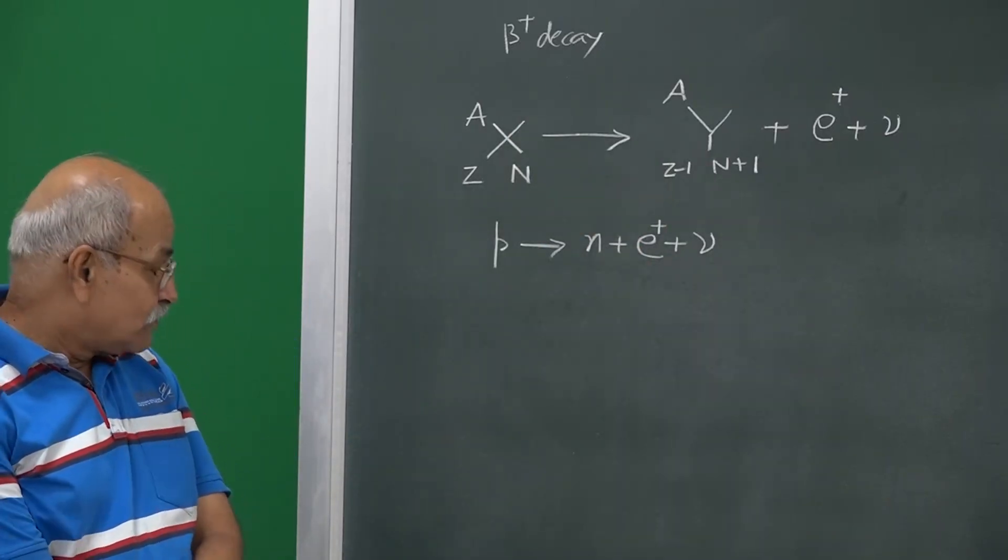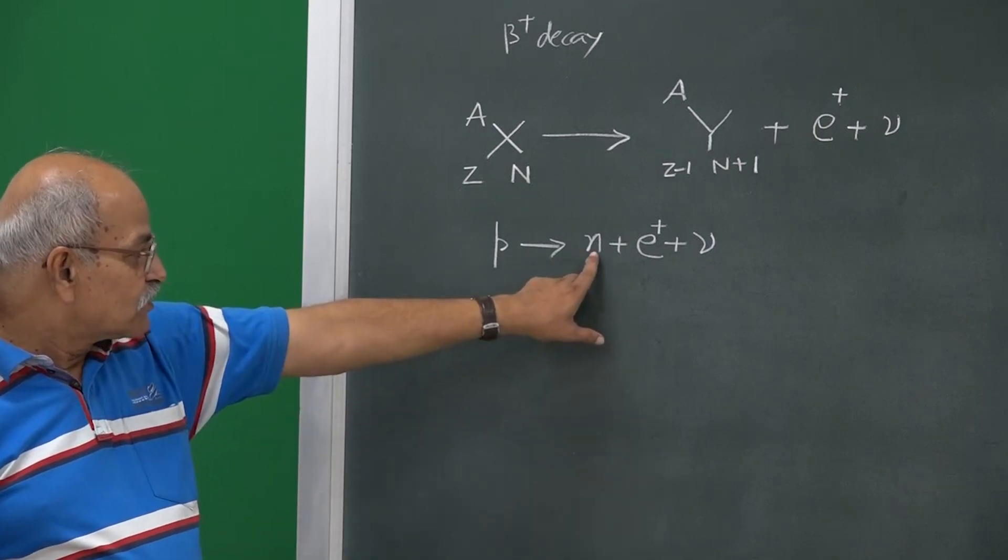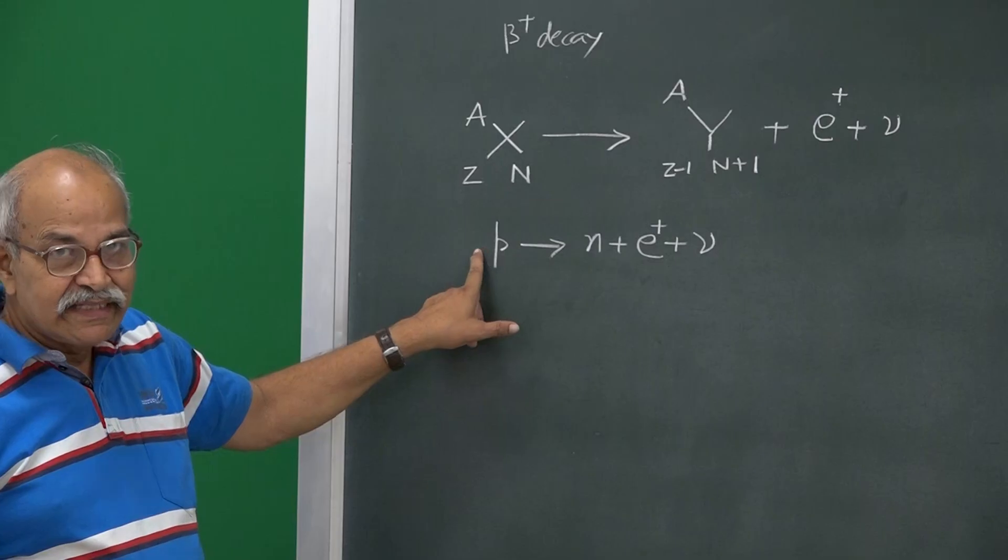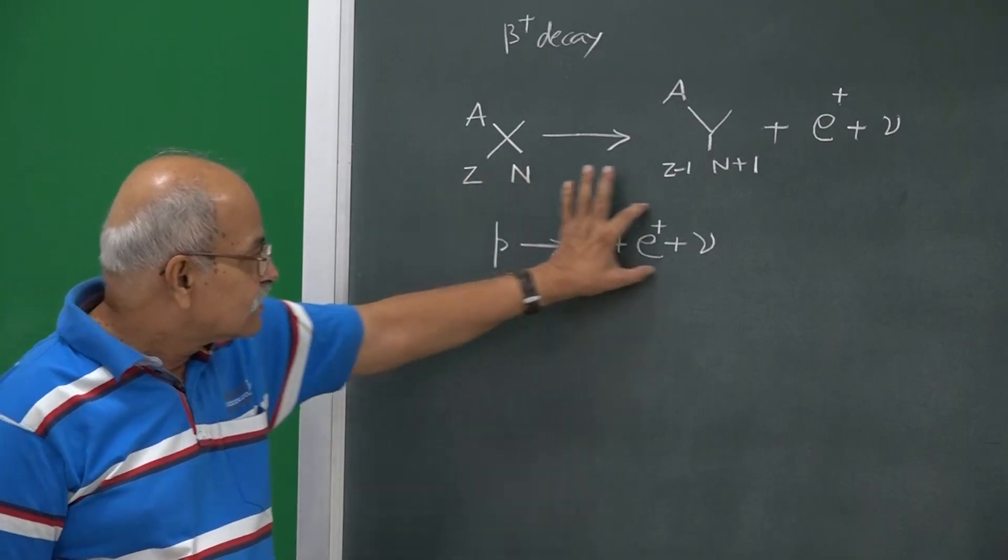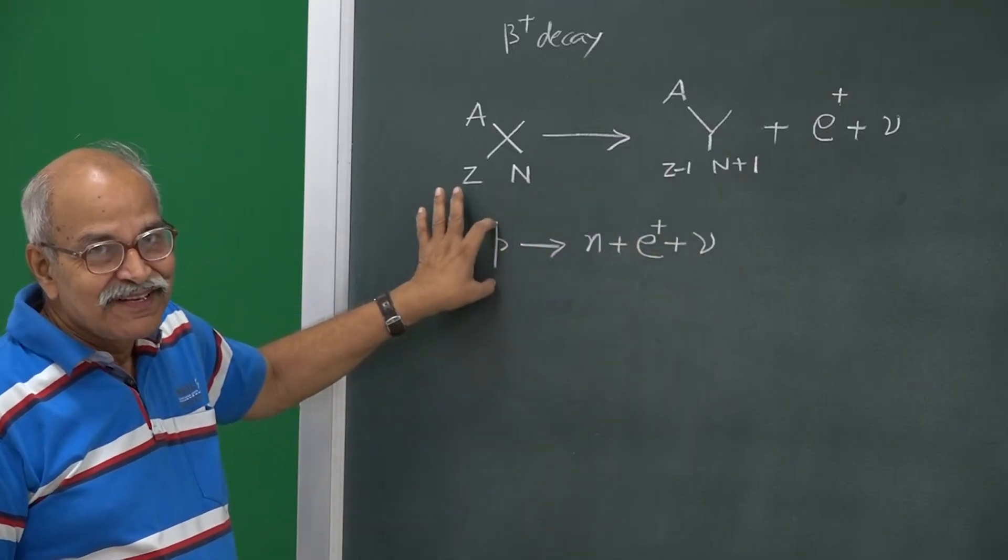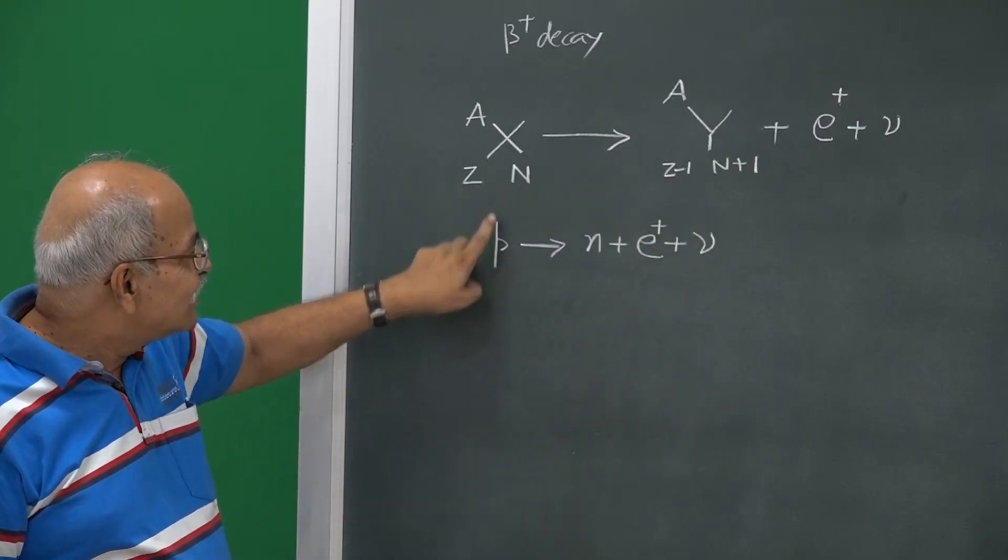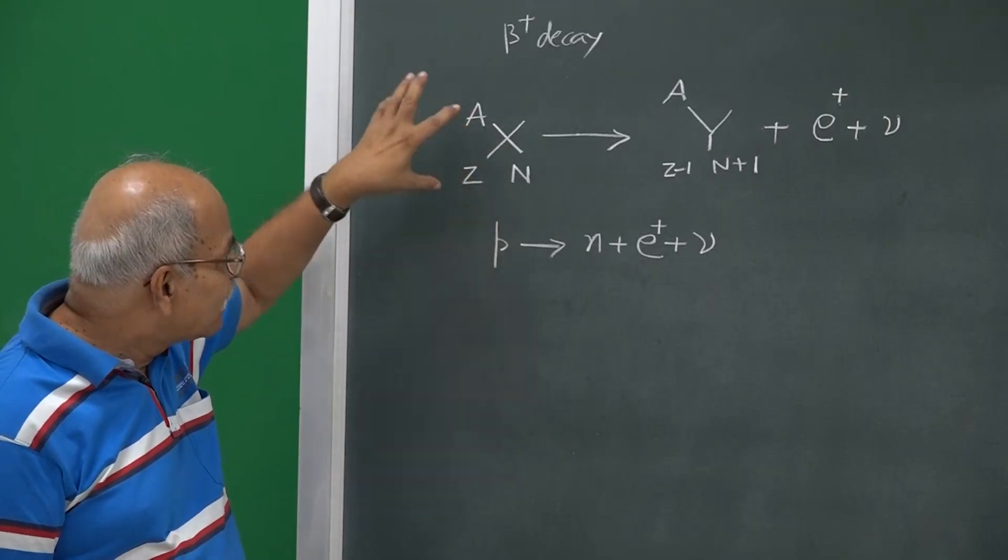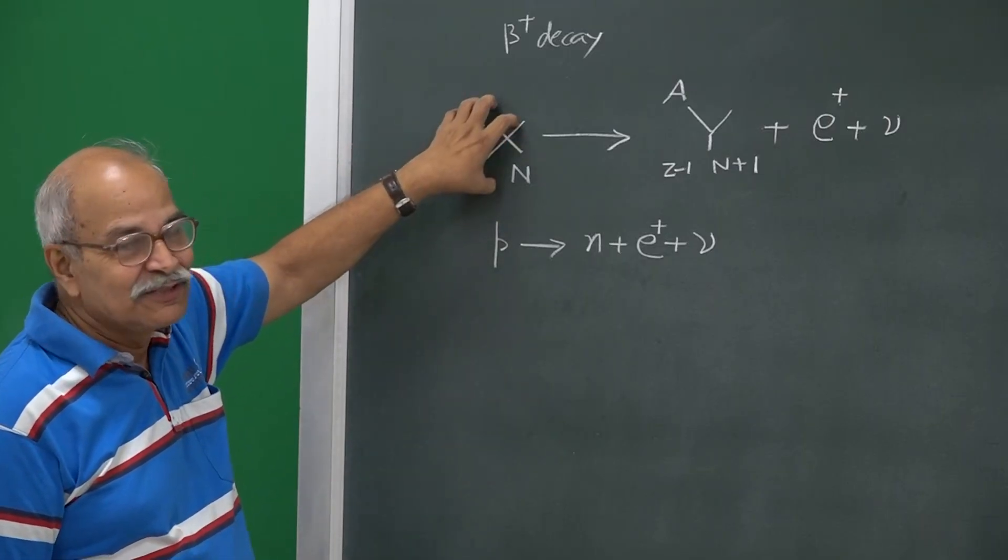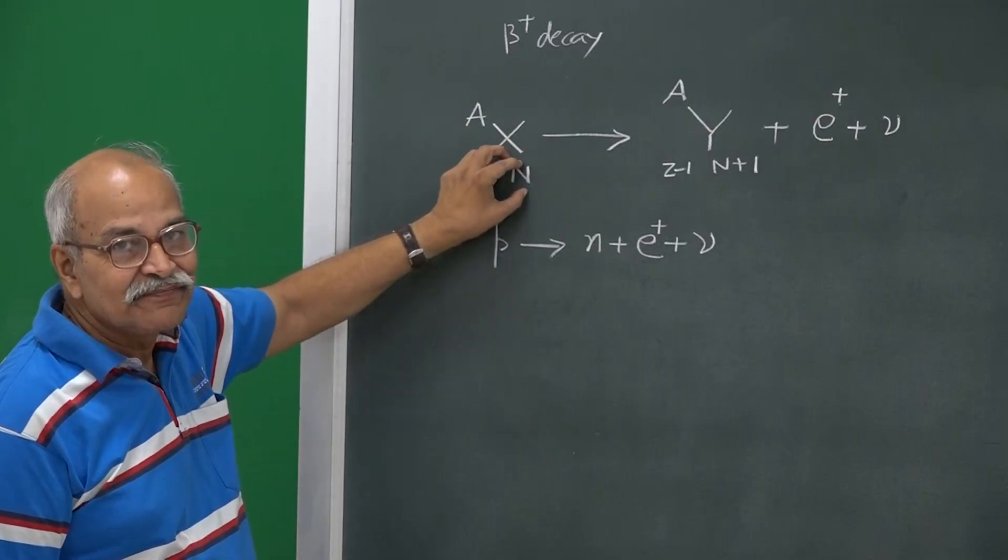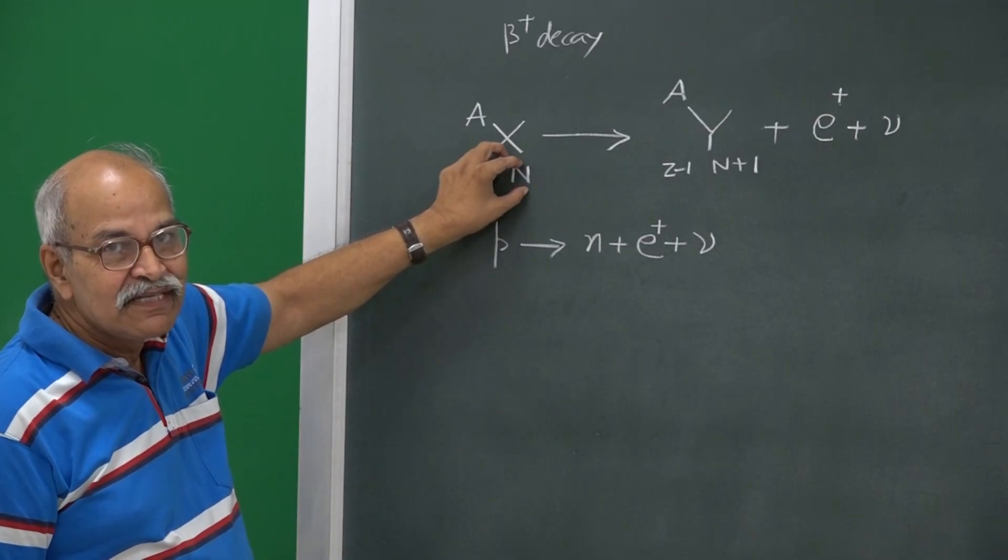Now, true the mass of neutron is more than mass of proton and energetically this reaction itself is not possible. But then this is not an isolated proton which is being converted, this proton is a part of a nucleus. There are many more protons and many more neutrons, collectively we call them nucleons.